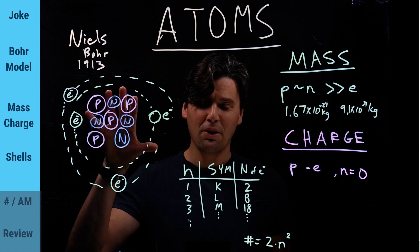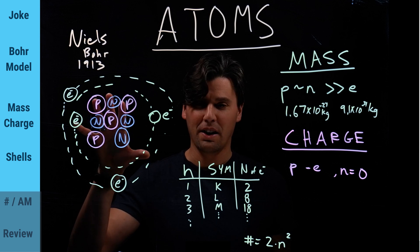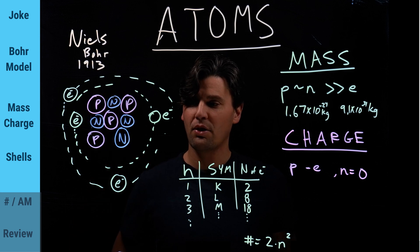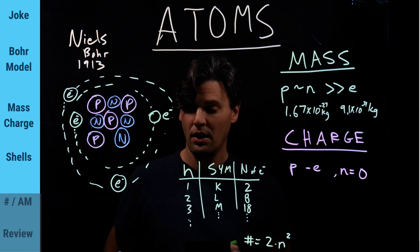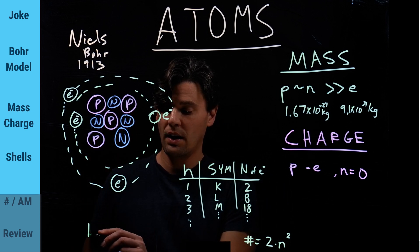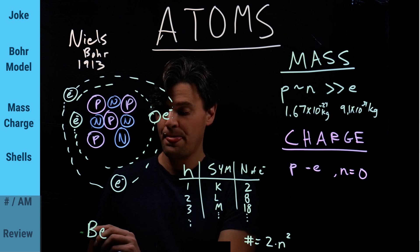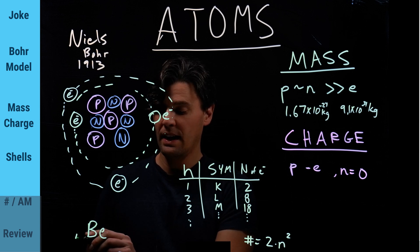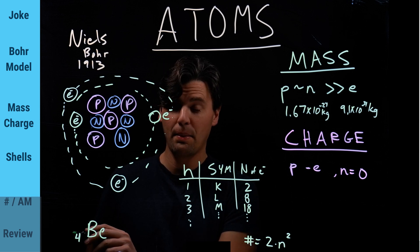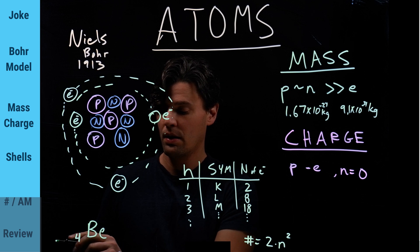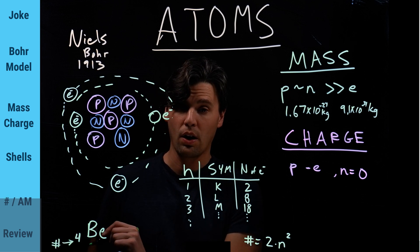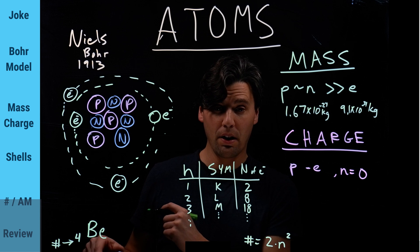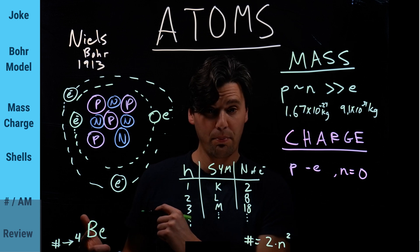So what's the element that we've drawn here? Let's count — one, two, three, four — so the element that we've drawn here is actually beryllium, and it has an atomic number of four. The atomic number is just the number of protons.